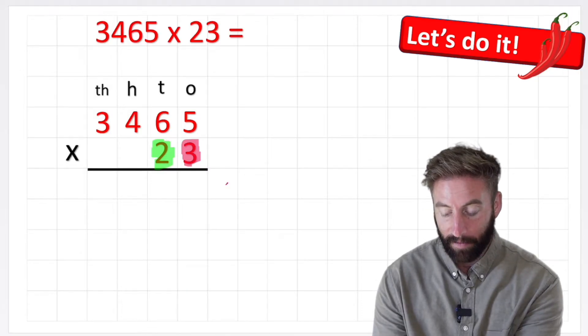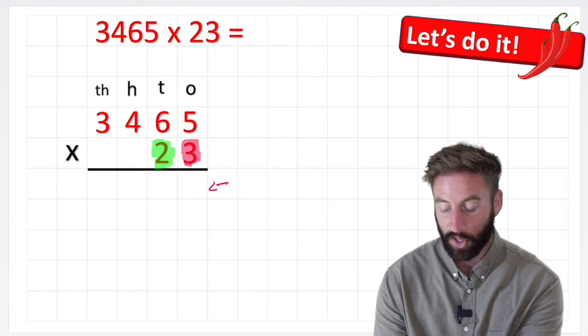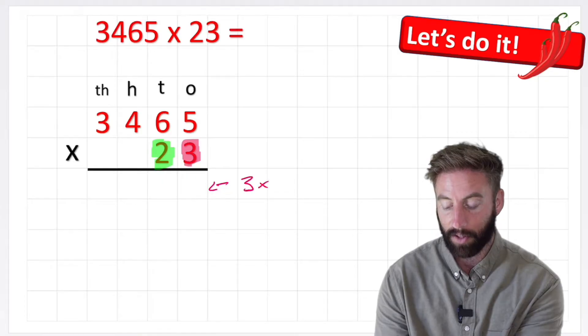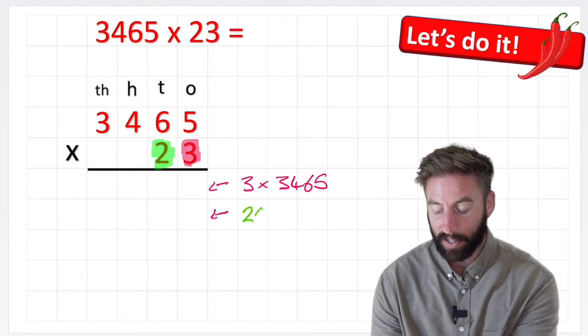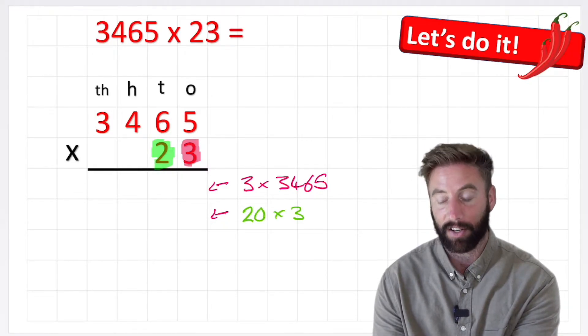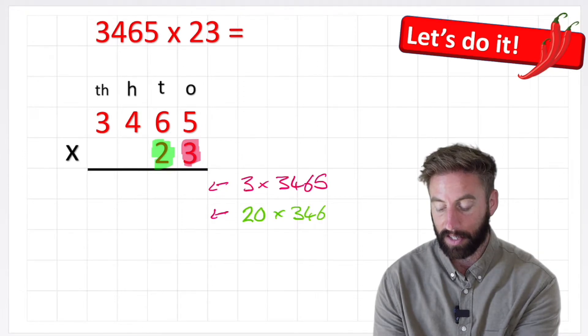So this row here is going to be answering the question 3 times 3465, and then the second row is going to be answering the question 20 times 3465.